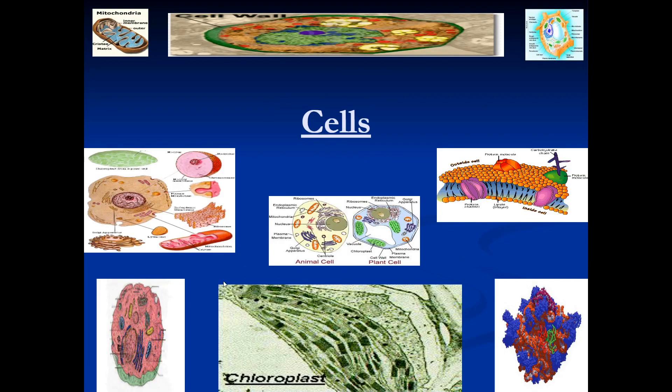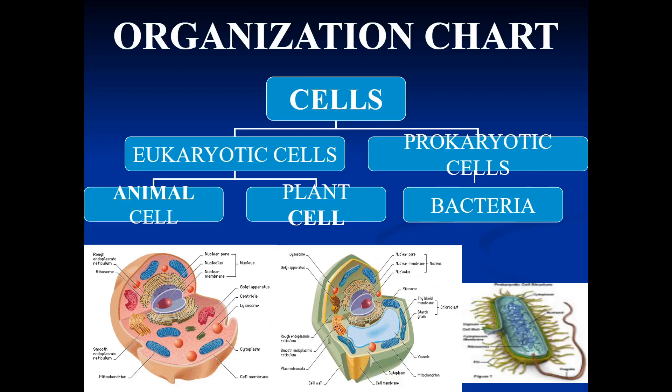Today we'll be learning about cells, basically what's inside of them and what they do. There are two different types of cells: eukaryotic cells and prokaryotic cells. Eukaryotic cells are cells inside us, such as animal cells and plant cells.